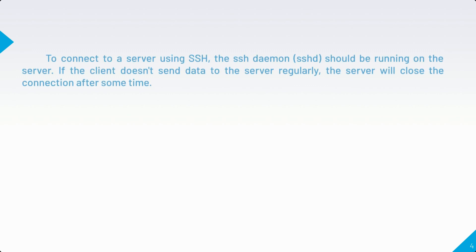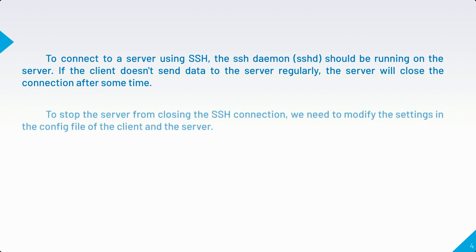To connect to a server using SSH, the SSH daemon should be running on the server. If the client doesn't send data to the server regularly, the server will close the connection after some time. To stop the server from closing the SSH connection, we need to modify the settings in the config file of the client and the server.